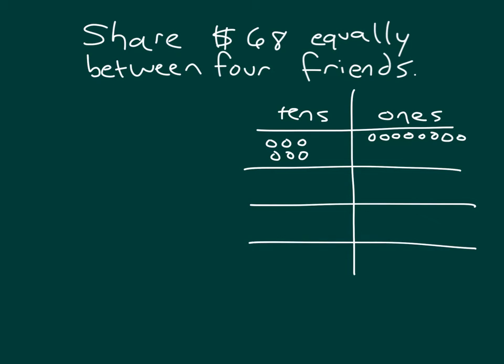And we're dividing it up between 4 friends. So how many groups are there? Right, 4. So we have 1, 2, 3, and 4.